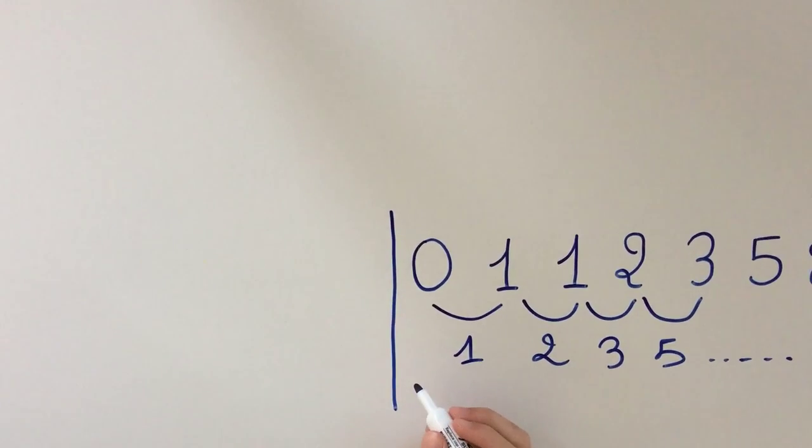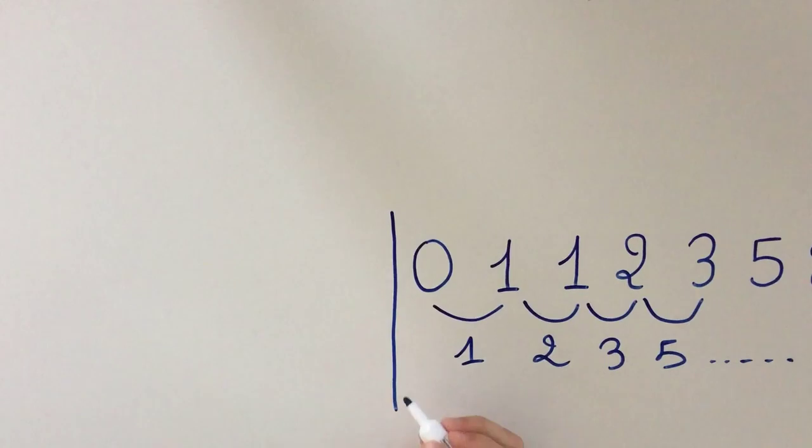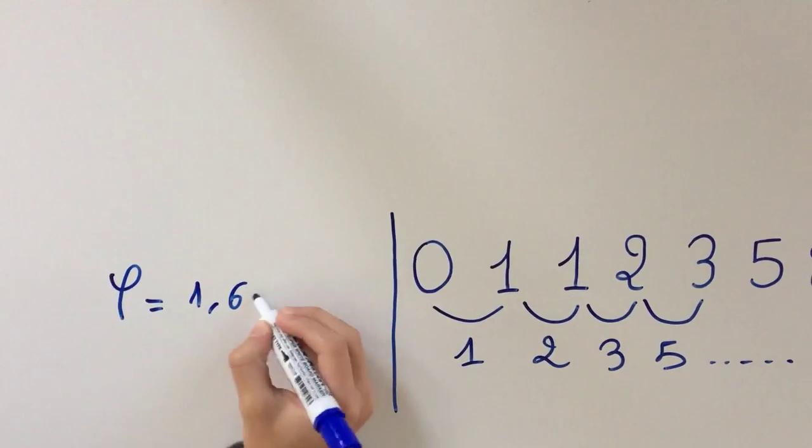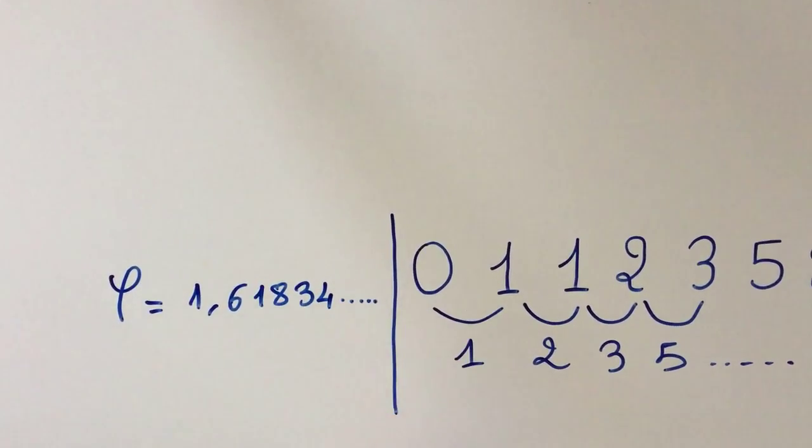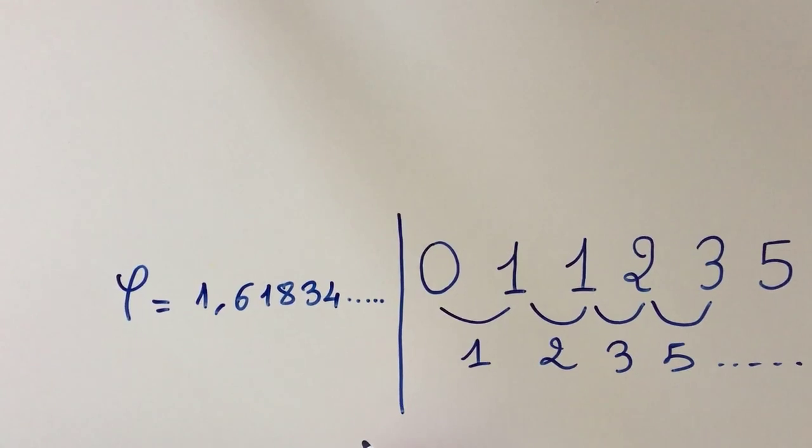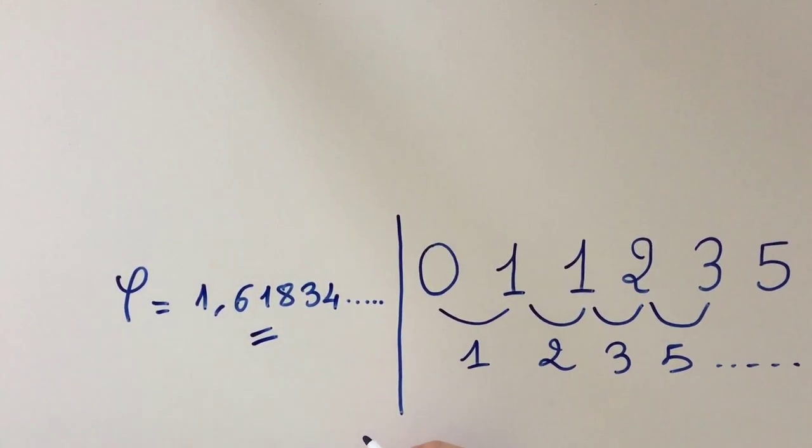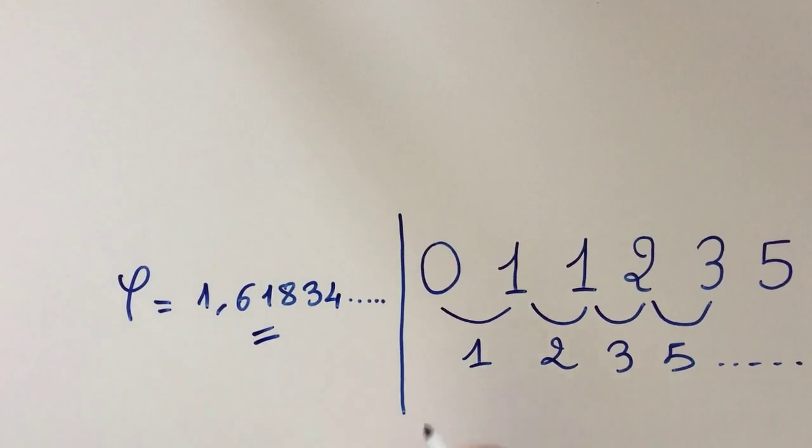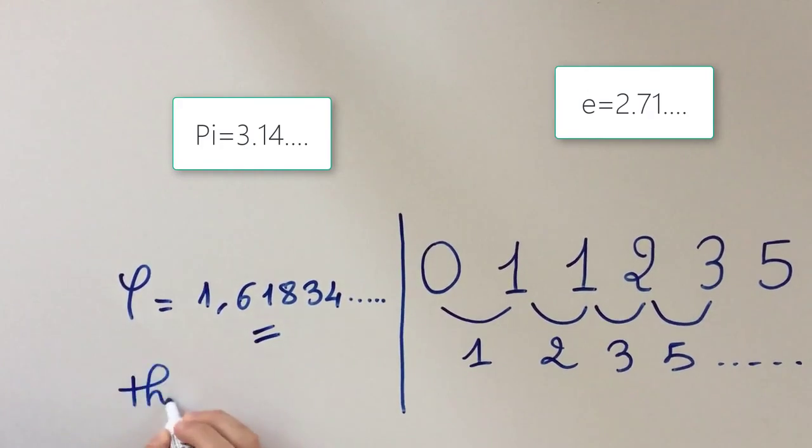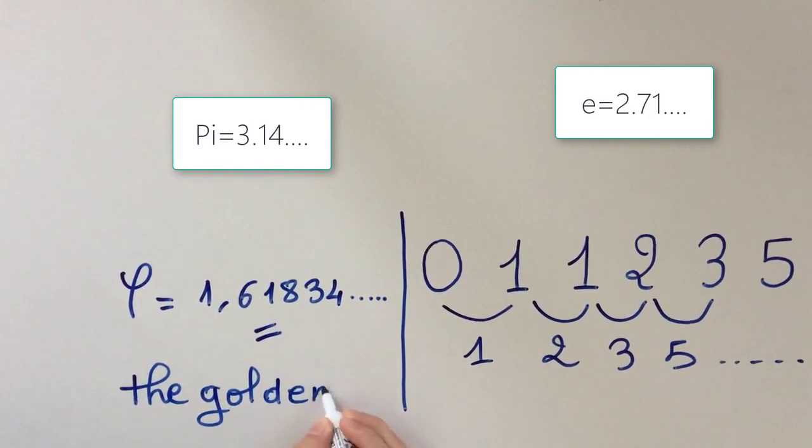What's more impressive and unique about it is that the ratio of each two numbers of the sequence is approximately 1.6184. In fact, the more the numbers of the sequence get bigger, the more this ratio gets closer in an asymptotic way to the number phi, which is an irrational number just as pi or e, and it is commonly called the golden ratio.